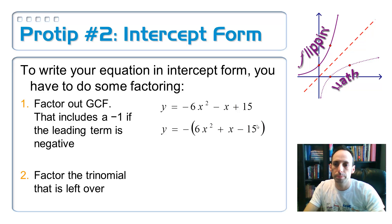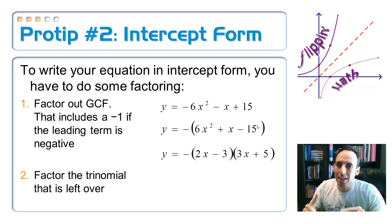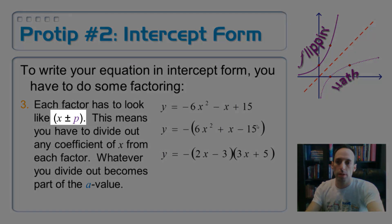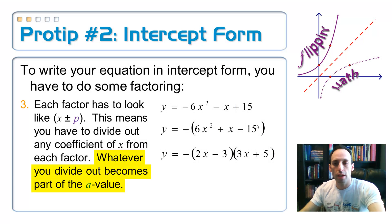So, it's going to look like this so far. So, now I have a trinomial left over inside the parentheses. Now, I just factor that thing as usual. And the way that it factors is just like this, 2x minus 3 and 3x plus 5. Is it in intercept form yet? No. What do you got to do? Okay, well, now you have to make it look like, or make each of the factors look like this, x plus or minus p. So, the x is by itself, and then you're adding or subtracting some sort of number from it. Whatever you pull out is going to become part of the a value.